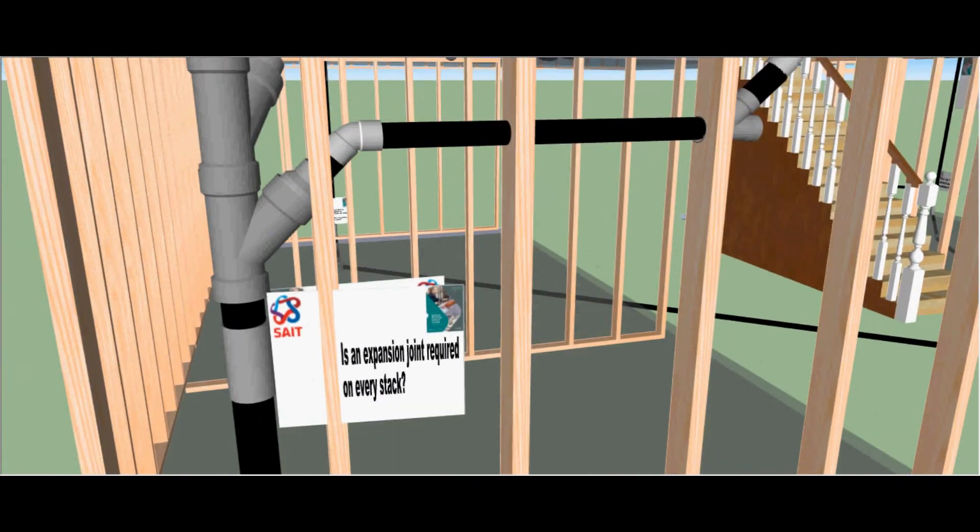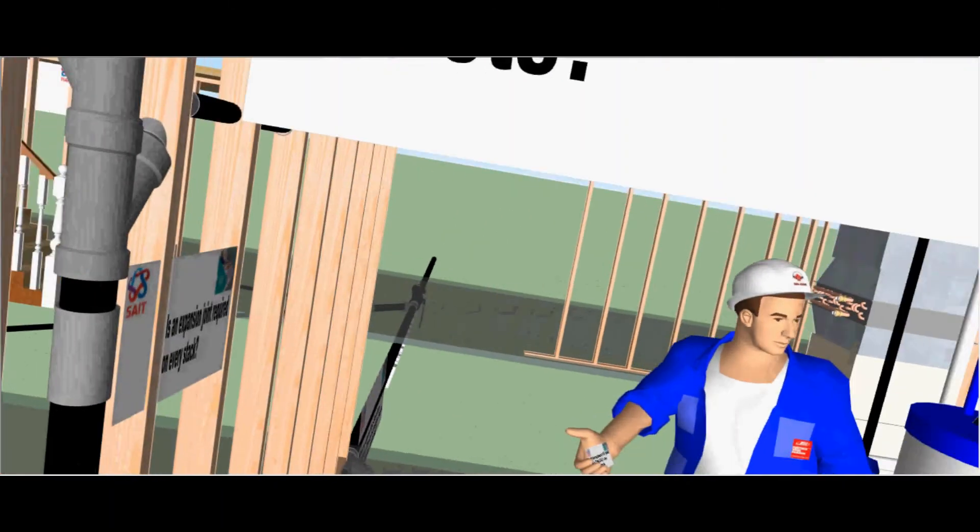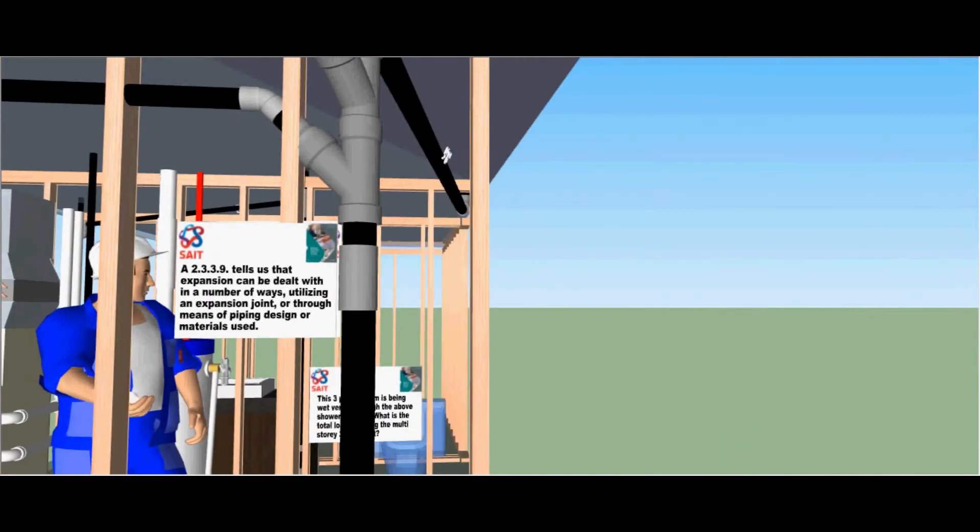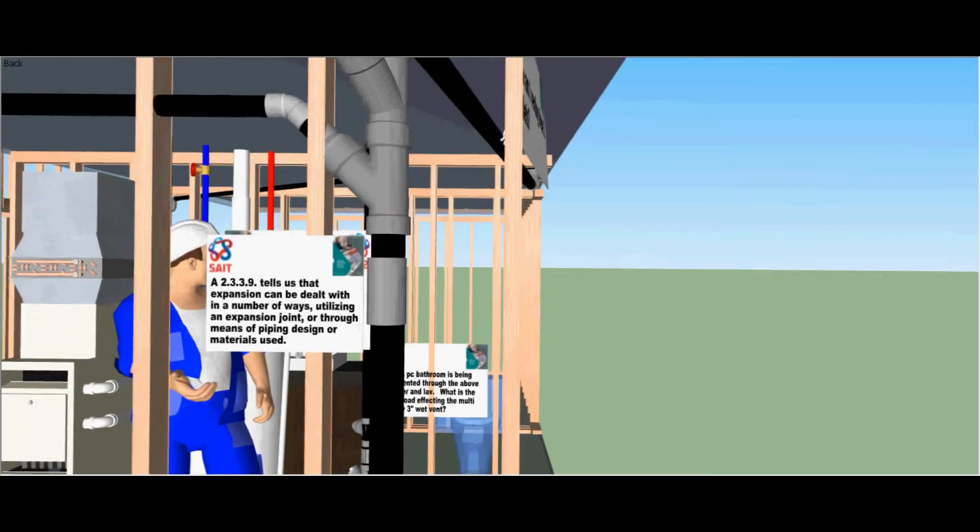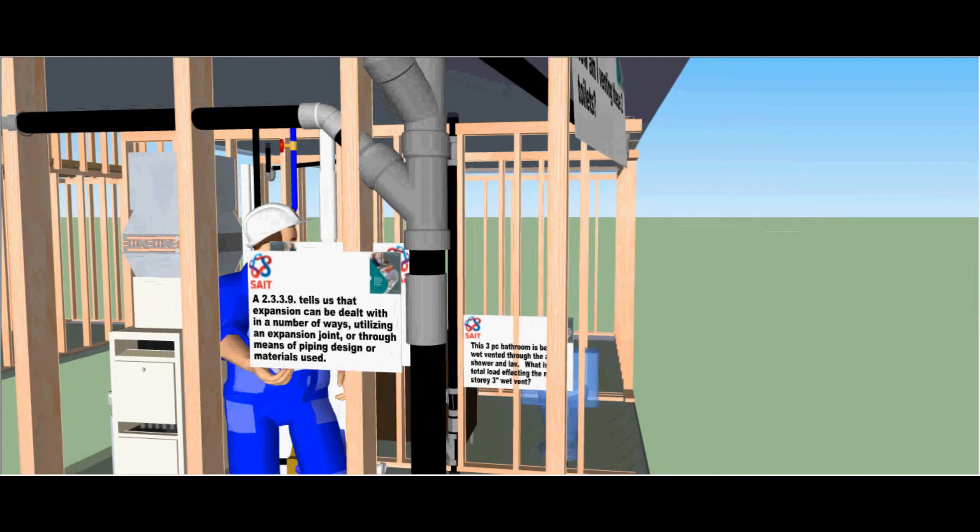Is an expansion joint required on every stack? Clause 2339 tells us that expansion can be dealt with in a number of ways utilizing an expansion joint or through means of piping design or materials used.